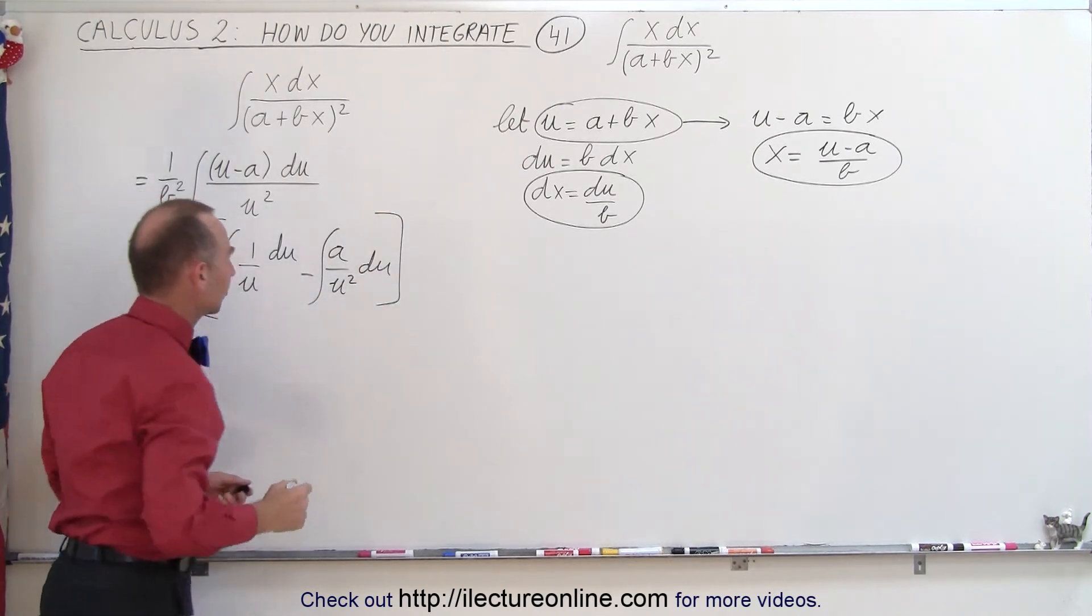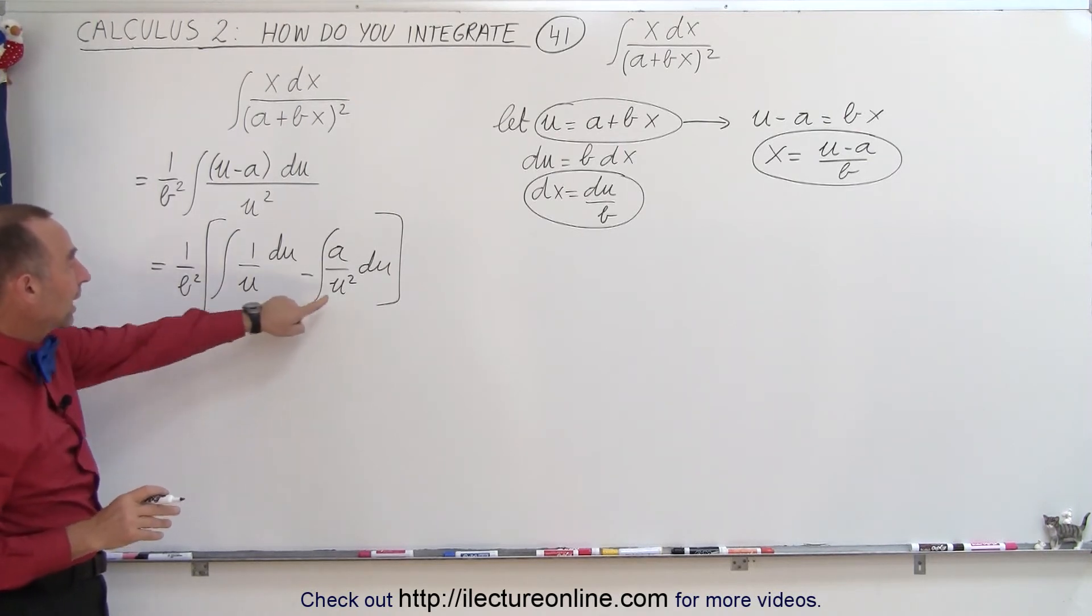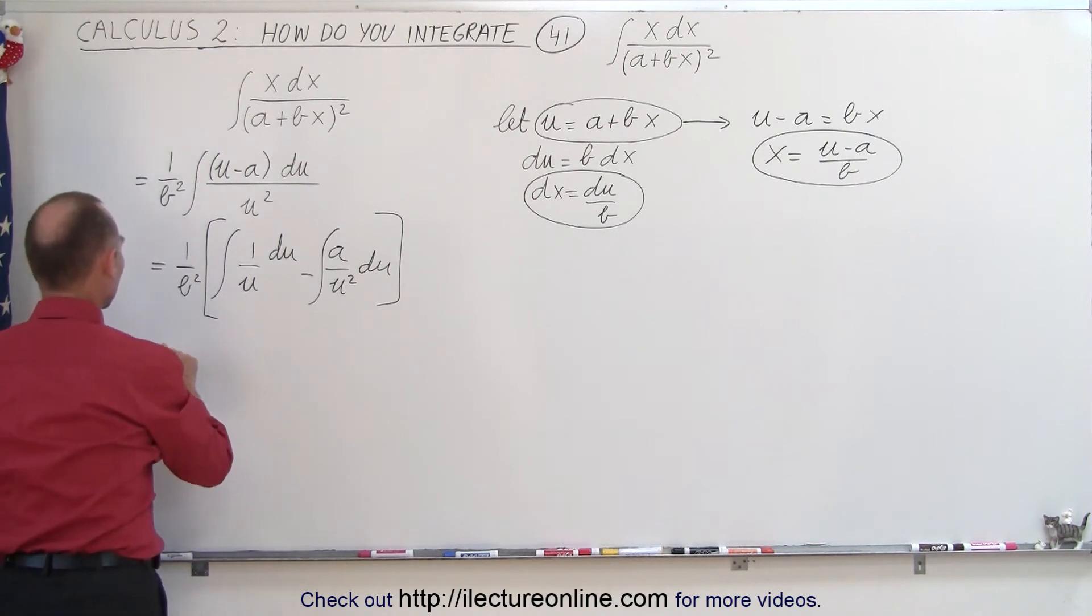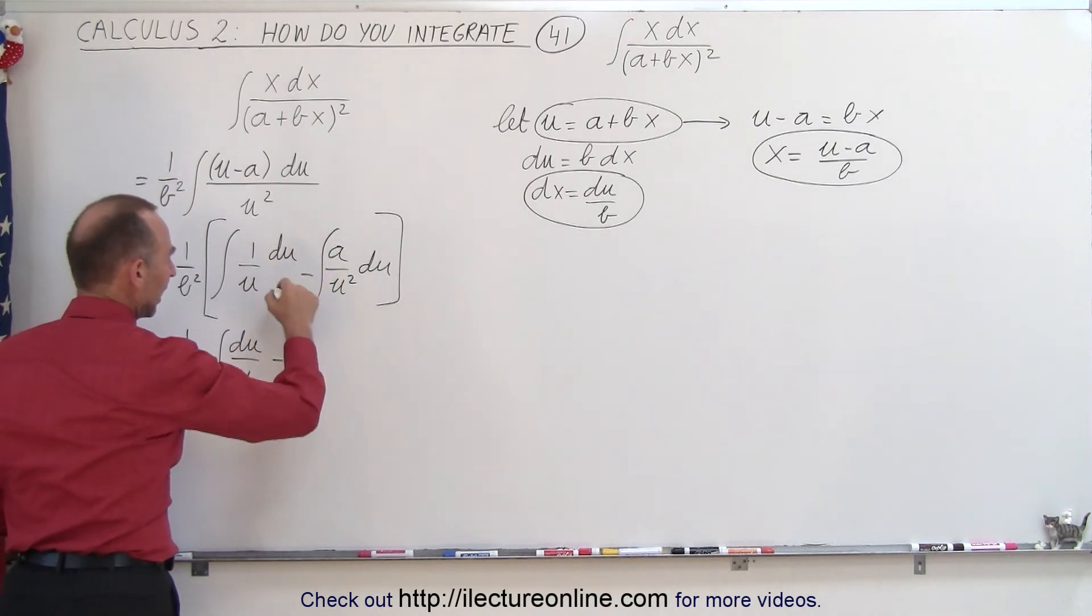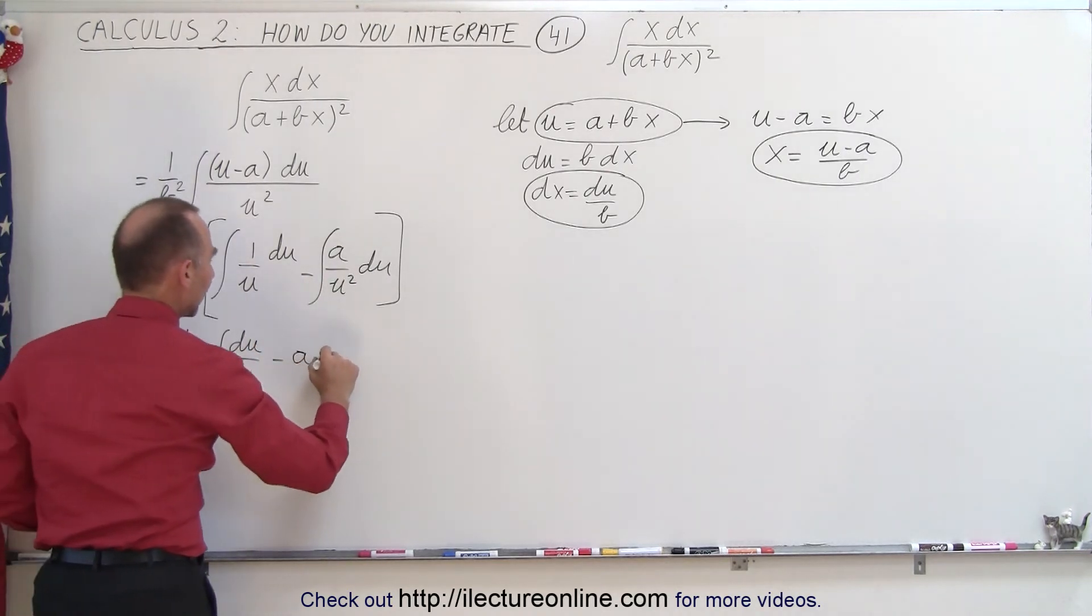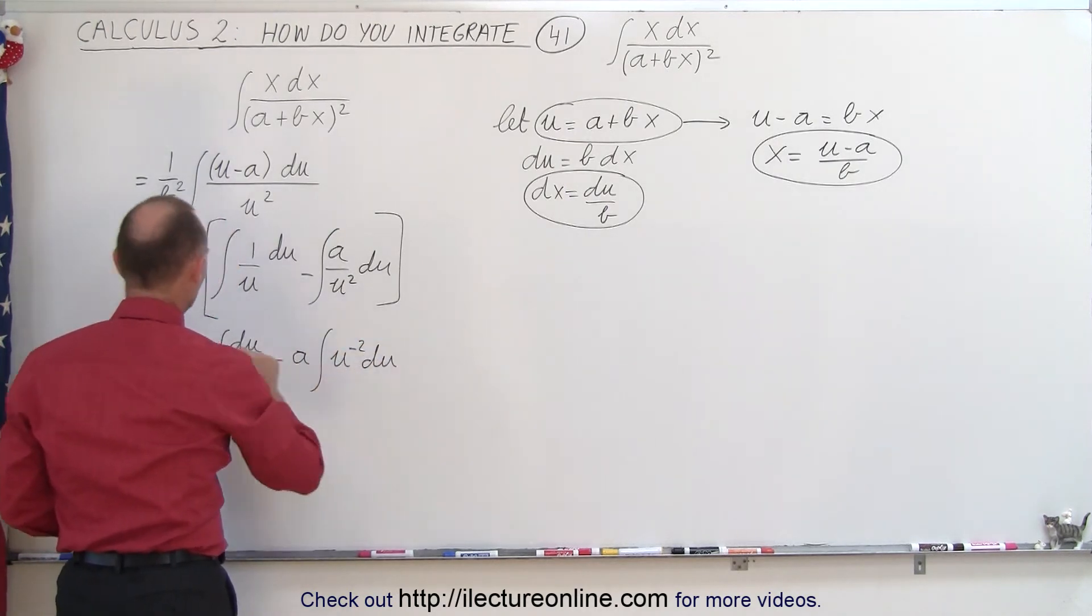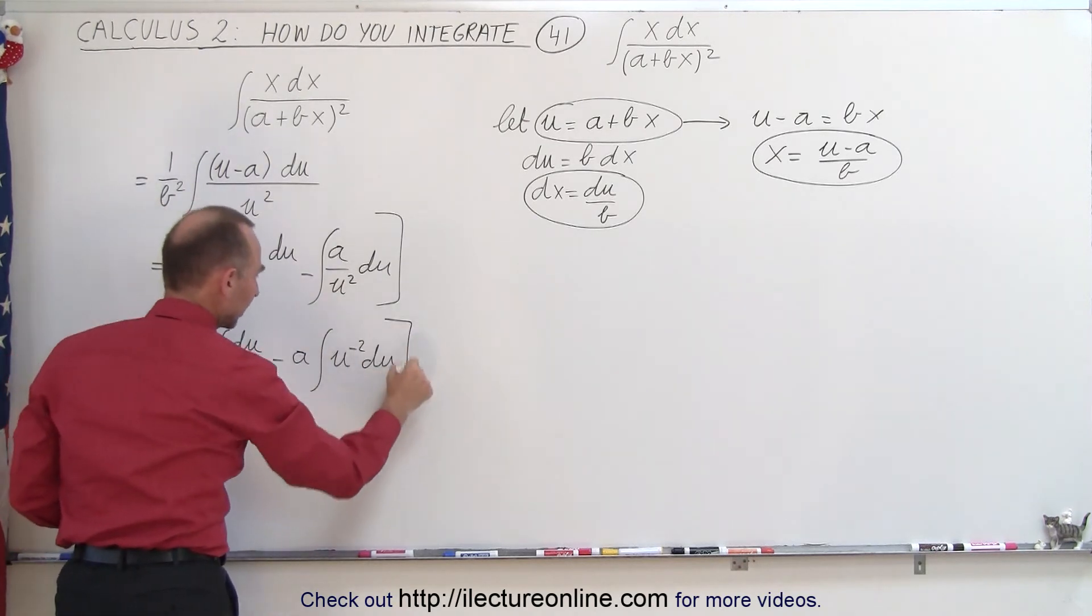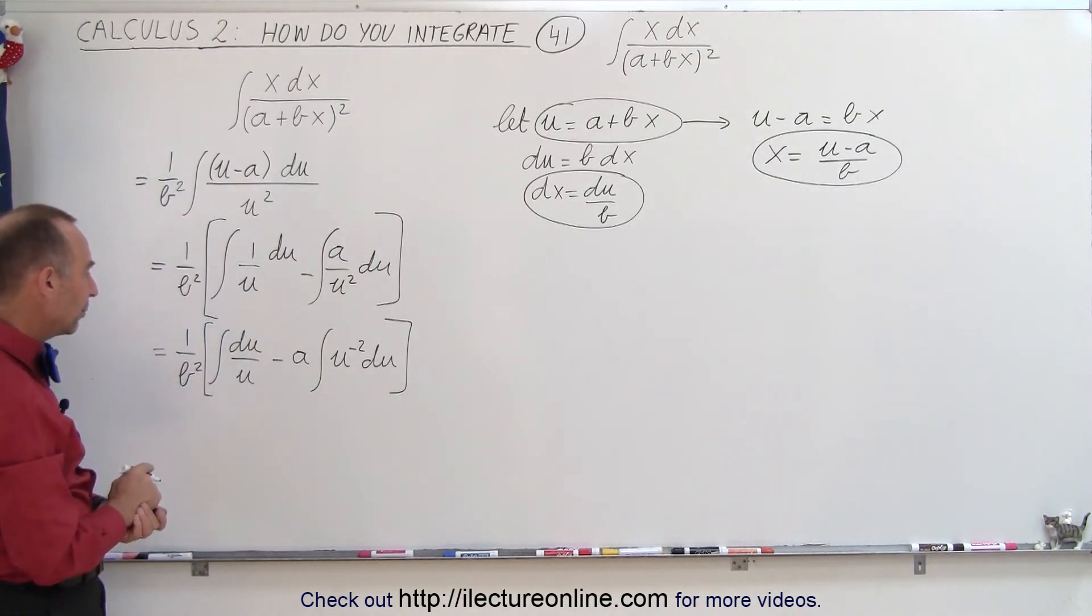Now this is easy to integrate because simply the natural log and here if we move this to the numerator you can see what that looks like. So this becomes equal to 1 over b squared times the integral of du over u minus, I'll put the a out, a times the integral of u to the minus 2 du. Sometimes when you rewrite it and I'll put big brackets around it like that, it makes it a lot easier to see how to integrate what's left.